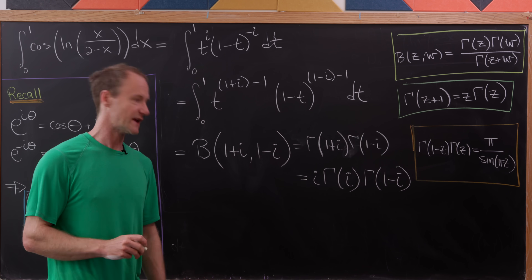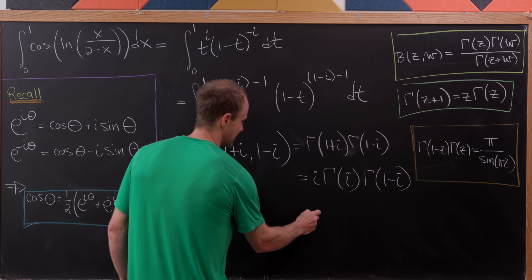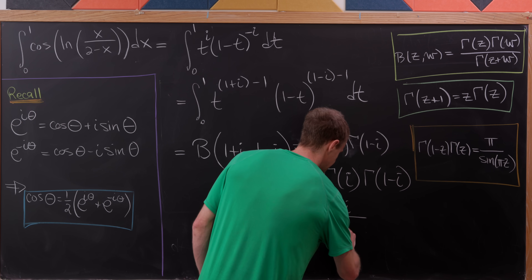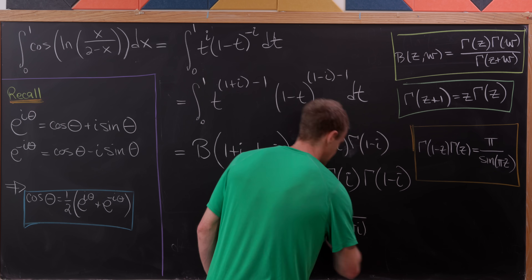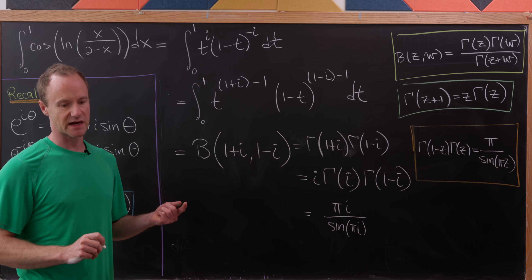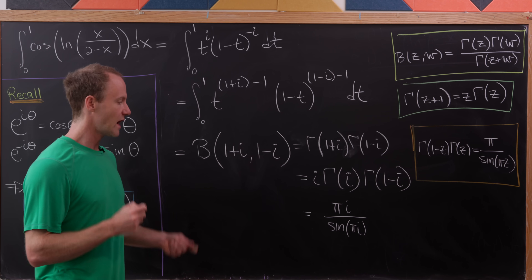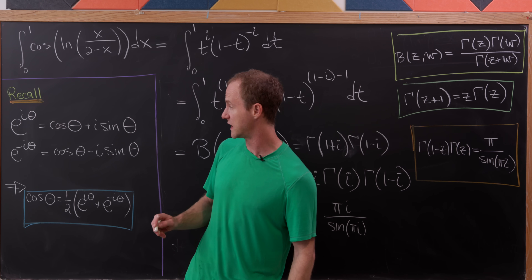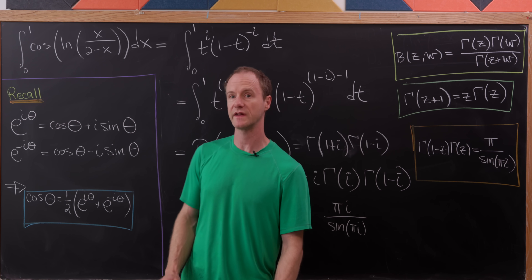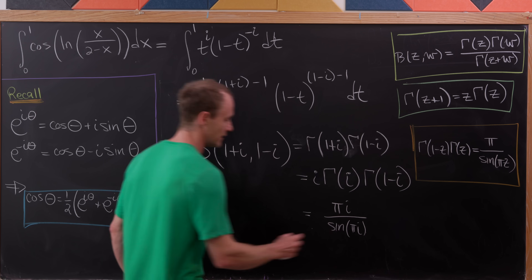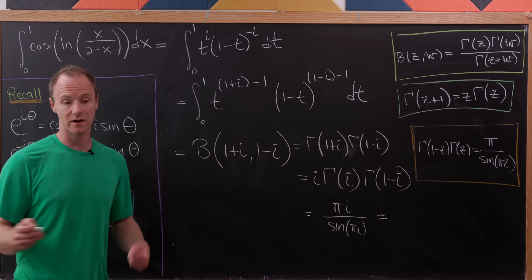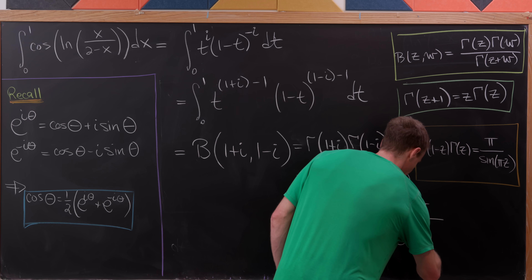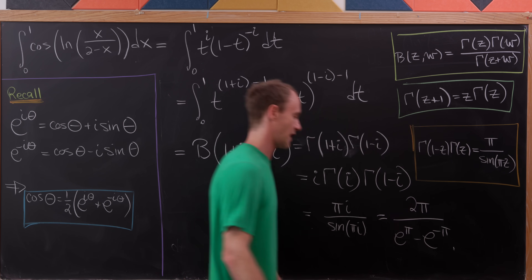The sine of pi*i is related to the complex exponential. After a short calculation, everything comes together to give our final answer: 2*pi over (e^pi minus e^(-pi)). And that's a good place to stop.